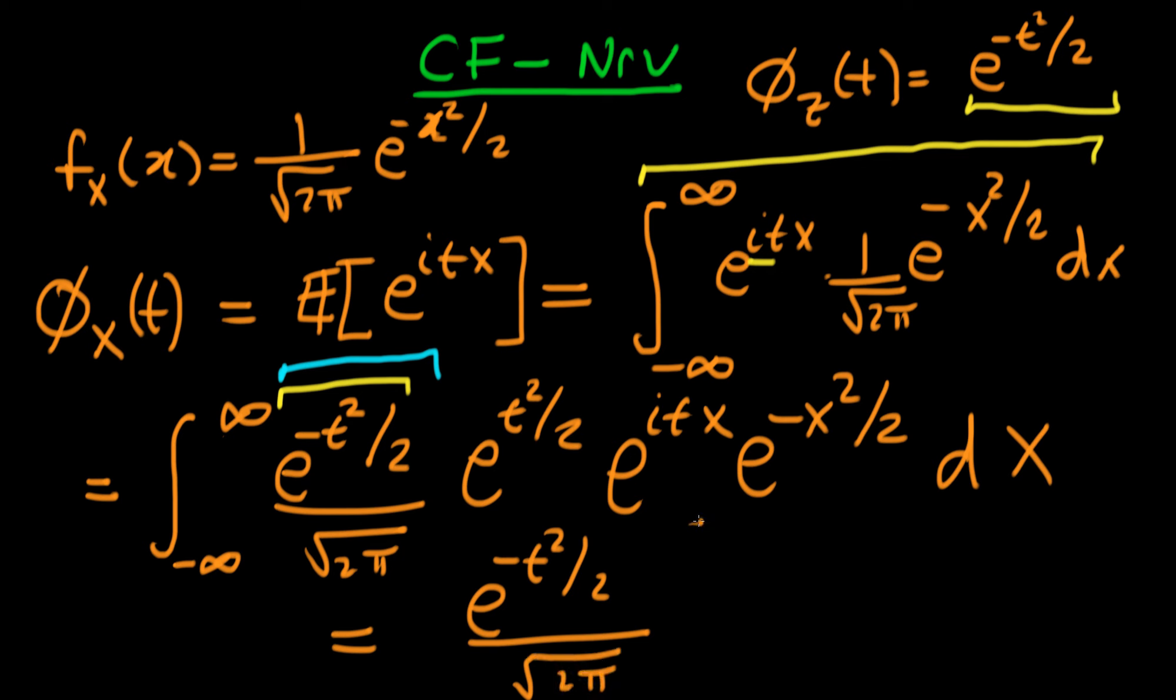Then we're left with our original integral, but if we look at this term, the powers are just a quadratic: minus x minus i t all squared. So we can write this as e to the minus x minus i t all squared divided by 2, integrated across x.